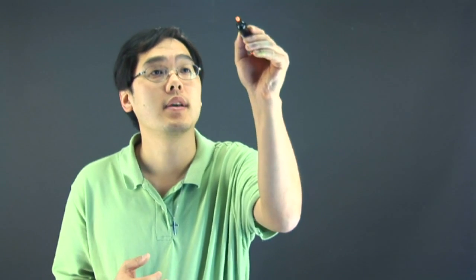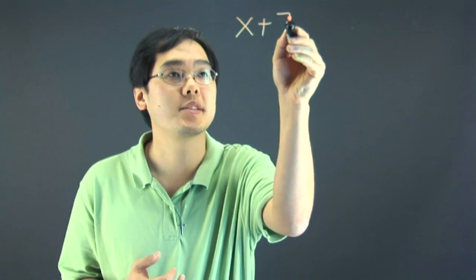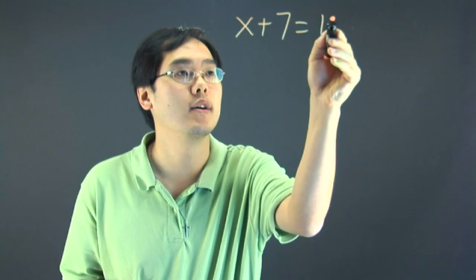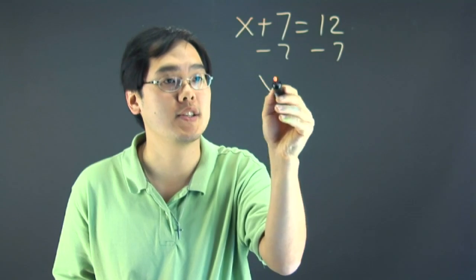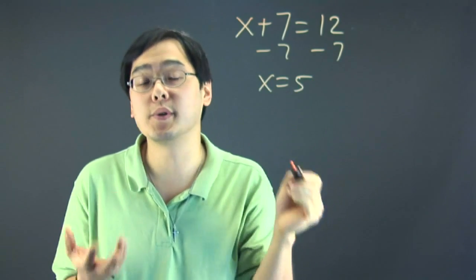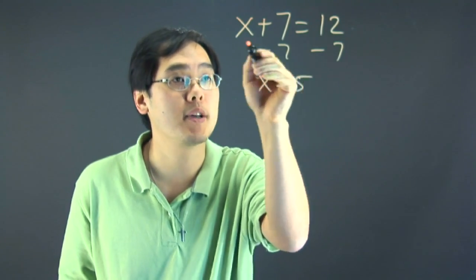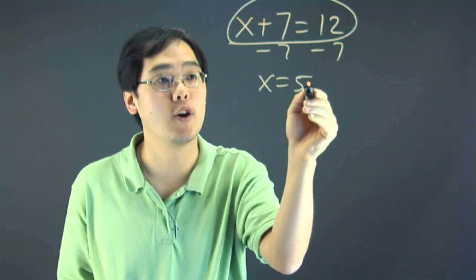So, for example, if you have a simple equation like x plus 7 is equal to 12, and you want to solve for that, subtract 7 on both sides, you have x equals 5. Reasonableness in math means that you can take the 5 and plug it back into the original equation and go from there.